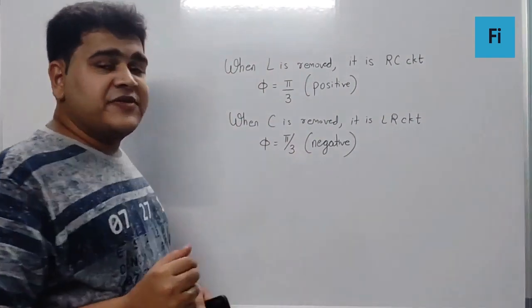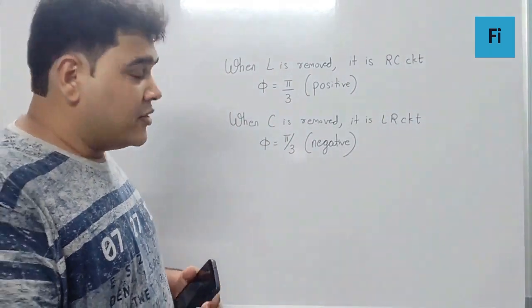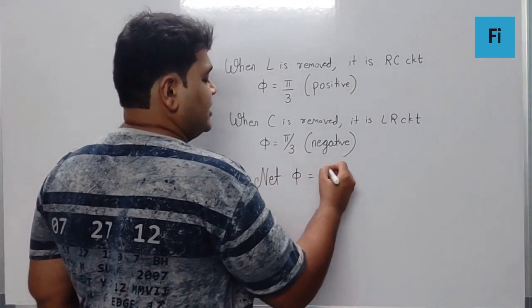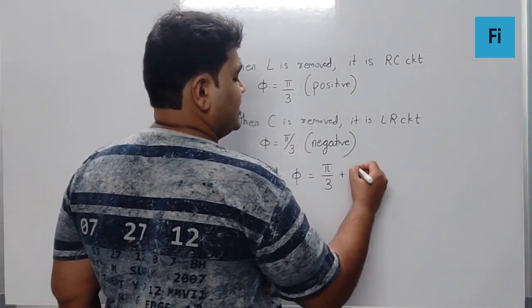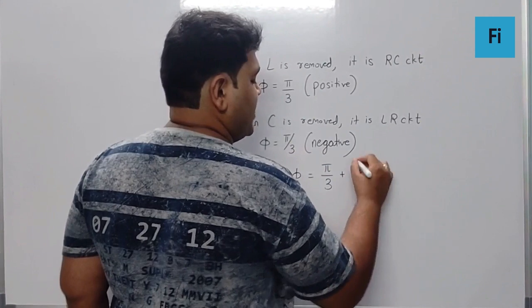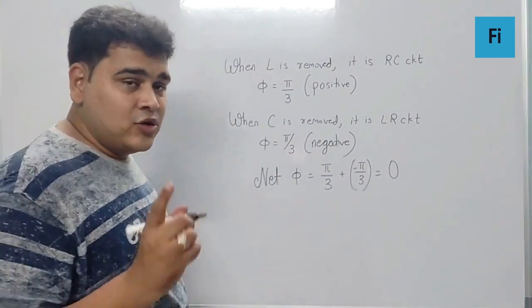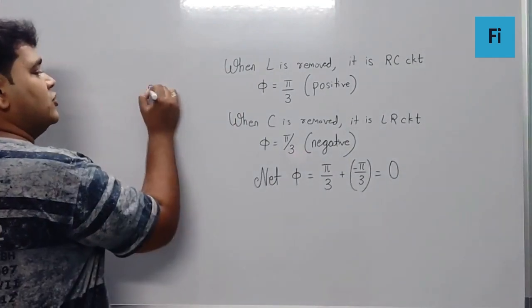Now that means the net phase difference is going to be pi by 3 plus negative pi by 3, that is 0. So the net phase difference is 0.